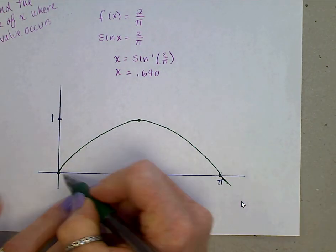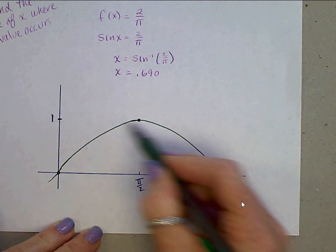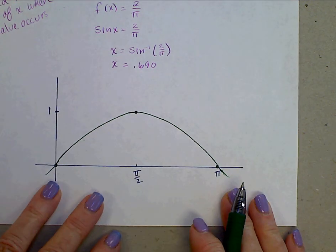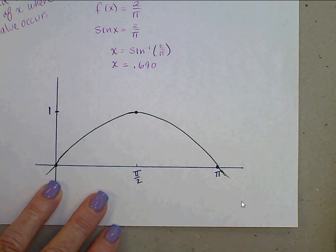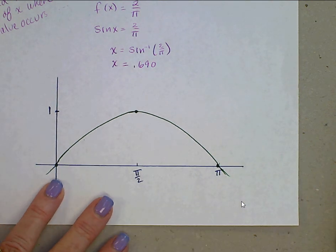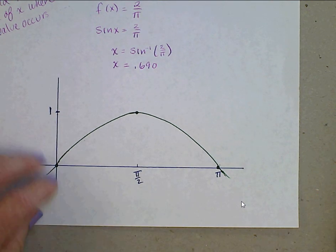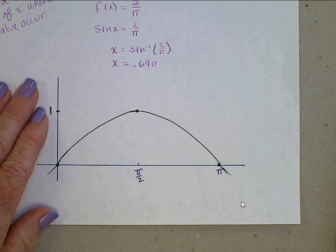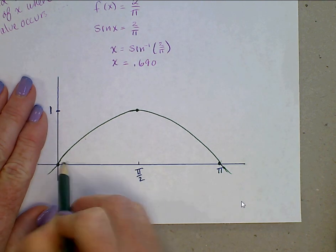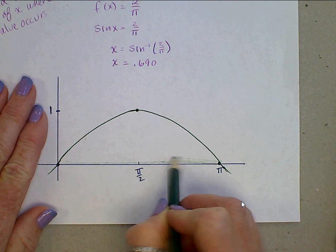And there's y equals sine x on the intervals from 0 to pi. Remember, sine has a period of 2 pi, so we're only seeing half of this sine curve. Now, the area underneath sine x is this on that interval from 0 to pi.